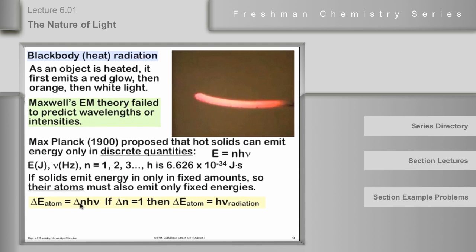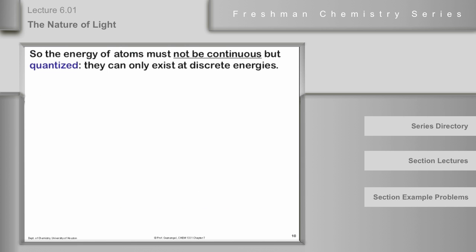So what Planck said was if solids emit energy only in fixed amounts, then the only reason that makes sense for that is if atoms also emit energy only in fixed amounts. The atoms that make up the solvent. And he expressed it mathematically this way. If an atom changes its energy level, the amount of change is equal to delta e of the atom. And that then will be delta n h nu, where delta n would be the final n minus the initial n. Now, most of the time, delta n would be 1, it turns out. In other words, it would be the atom in the next highest state coming down to the state just below it. And if that were the case, then delta e of the atom would be equal to Planck's constant times nu of the radiation. This is called Planck's equation. And keep in mind that h nu of the radiation is also equal to e of the radiation. So delta e of the atom equals e of the radiation is equal to h nu of the radiation.